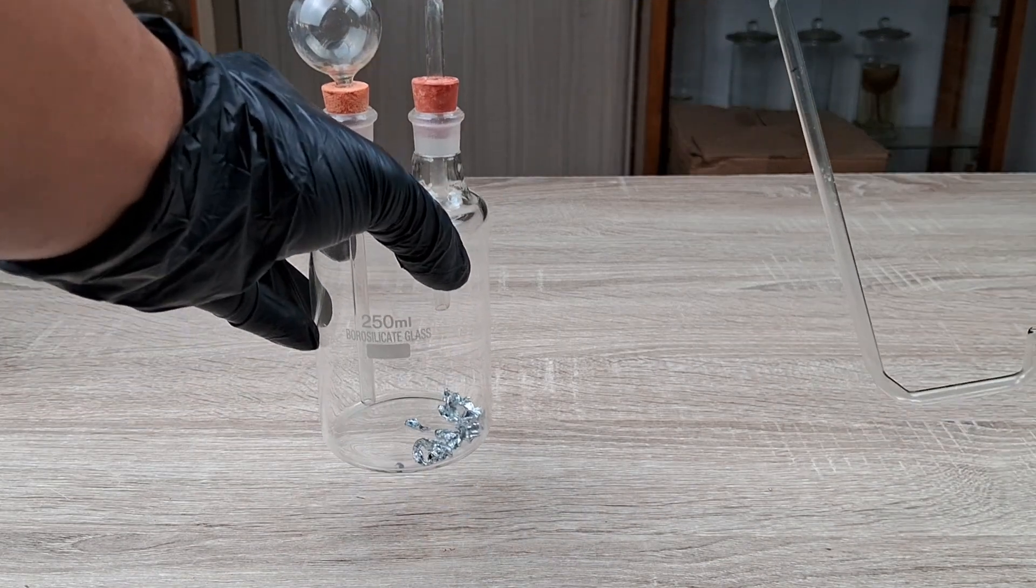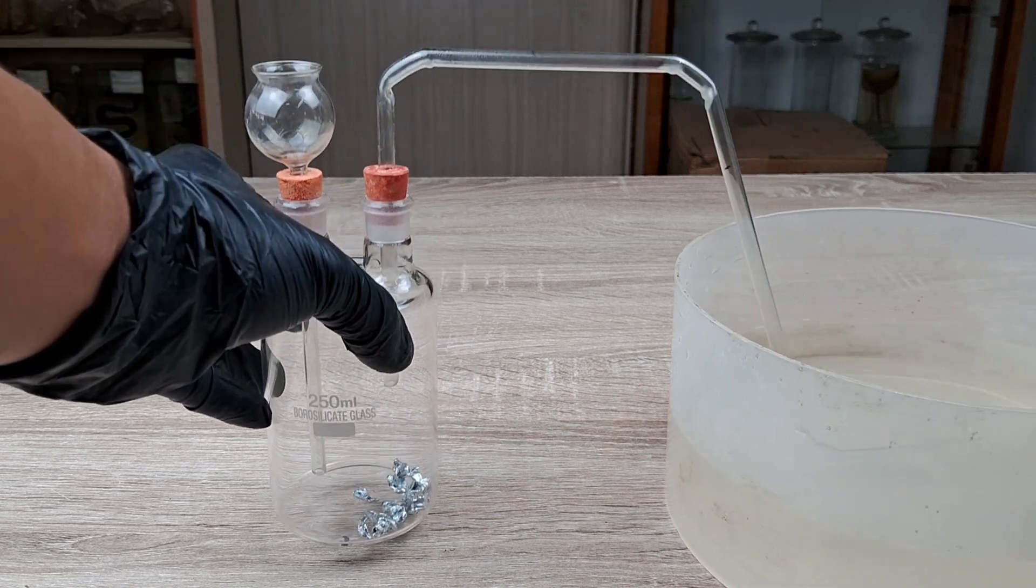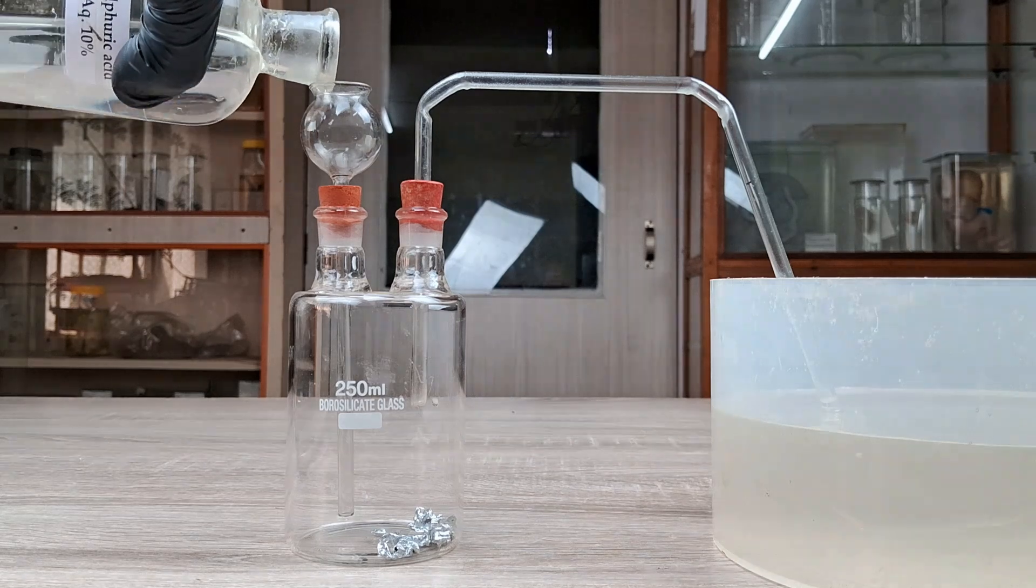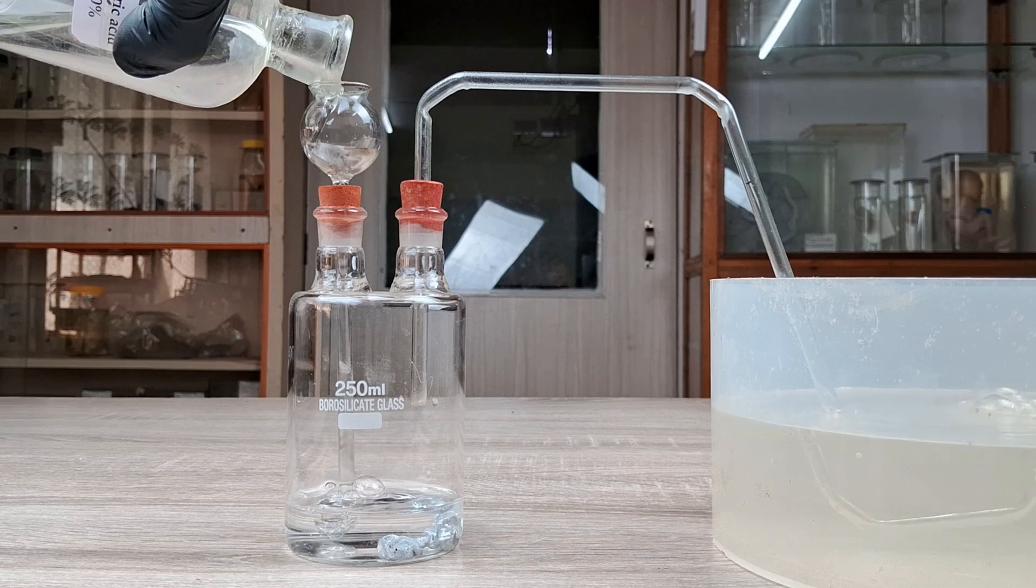Immerse the free end of the delivery tube into the water contained in the trough or beaker. Now, carefully pour enough of the dilute sulfuric acid into the thistle funnel until the lower end of the funnel is submerged in the acid.